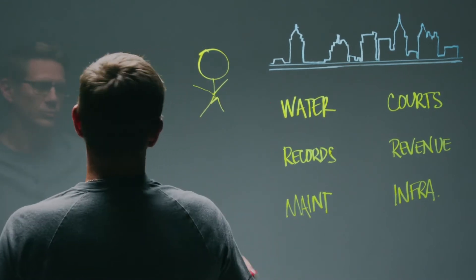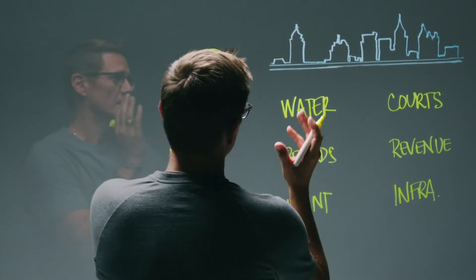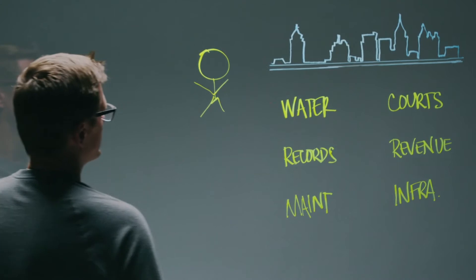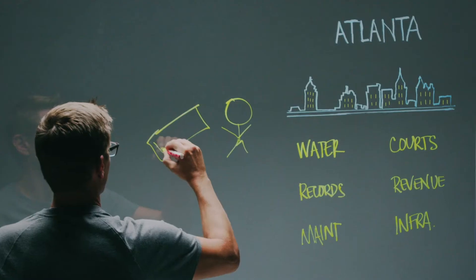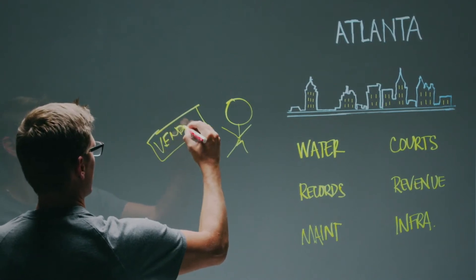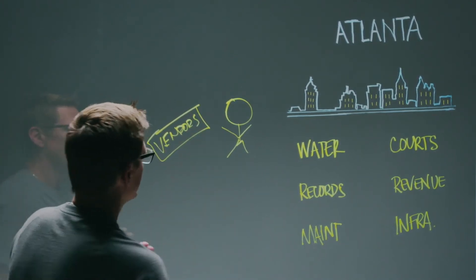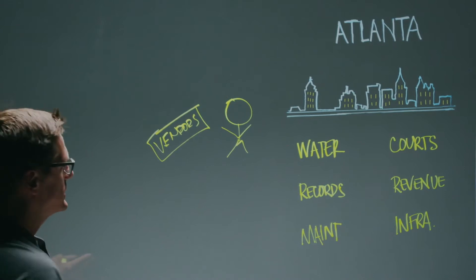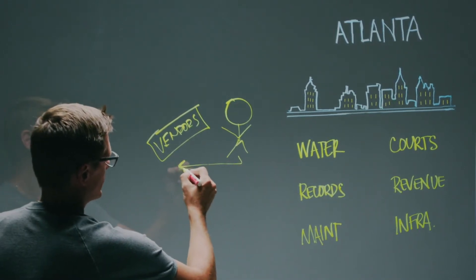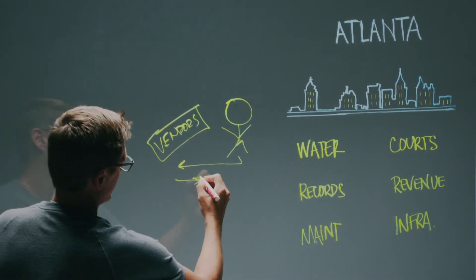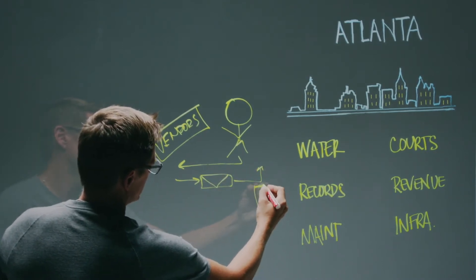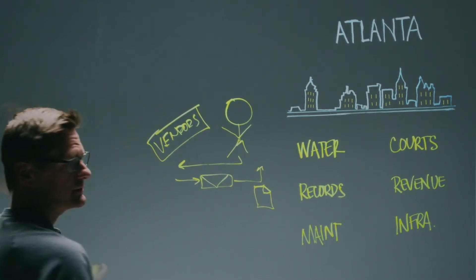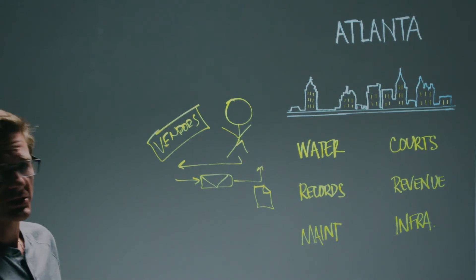This user was an employee of the Atlanta local government. He ultimately was communicating with outside vendors, as they do. And in this communication, he was sending emails. He got an email back, and that email contained an attachment. That attachment just turned out to be malicious in this case.